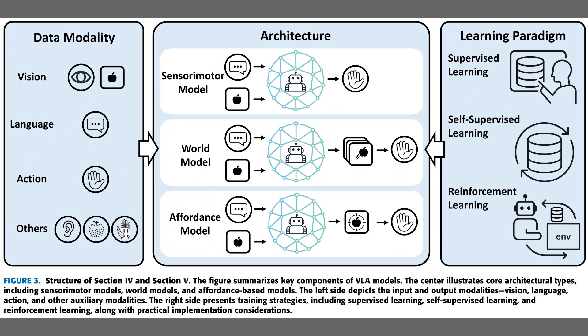Figure 3 summarizes the system layout, with three panels that connect inputs, architectures, and training. The left panel lists data modalities such as vision, language, action, and other sensors. The center panel contrasts sensory motor, world, and affordance models, which differ in whether they predict actions directly or use predicted futures and affordances. The right panel highlights supervised learning, self-supervised learning, and reinforcement learning as complementary training routes.